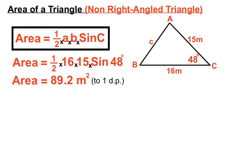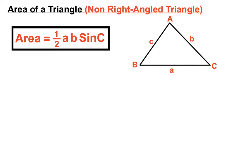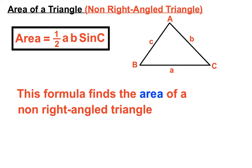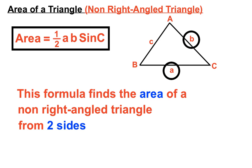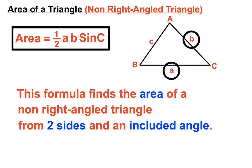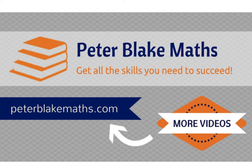So that's a pretty straightforward one. We've got a formula for the area of a triangle that doesn't have to be a right-angle triangle, because we're using two sides and the angle in between. If we have that information, we can find the area using the half ab sine c formula. The formula finds the area of a non-right-angle triangle from two sides and an included angle. Hope that helps — if you're unsure about any of your maths or want to revise a topic, visit peterblakemaths.com. See you next time.